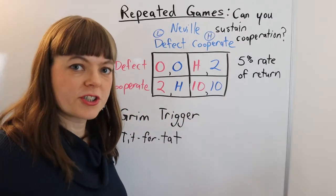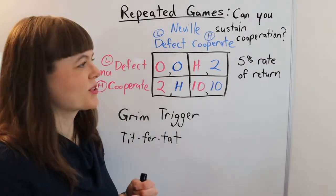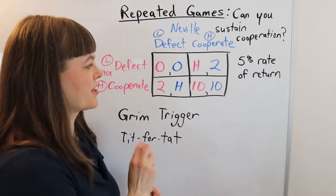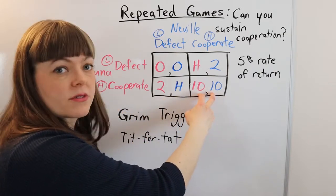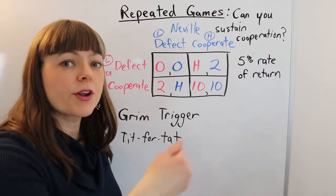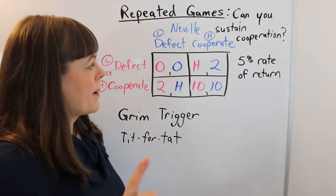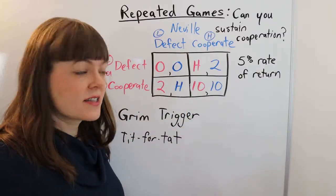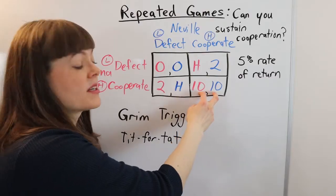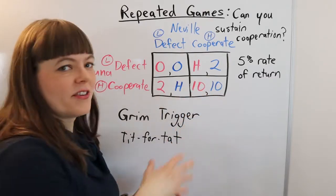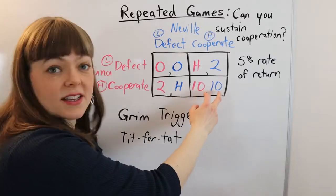So the grim trigger strategy is a strategy where you say behind closed doors, when you're trying to collude with the other person, you say, I will cooperate with you the first round and I will cooperate with you every round after that, as long as you cooperate, but if you ever defect, then I'm automatically going to always defect after that. And I will never cooperate with you.